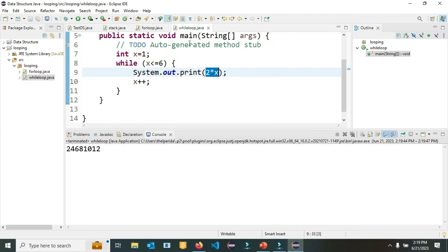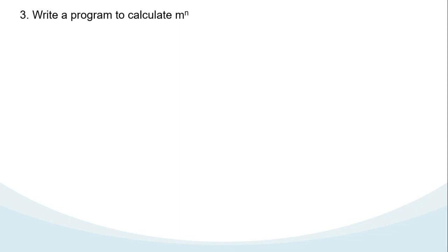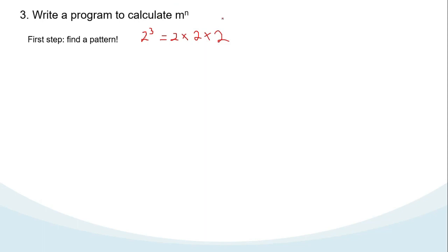Exactly like we wanted. Now let's see one more example. You are asked to write a program to calculate m to the power of n. For simplicity I will change m to the power of n to 2 to the power of 3. Finding the pattern: 2 to the power of 3 means 2 times 2 times 2, so there is a repetition job here — three times. We are repeating multiplication of the number by itself.